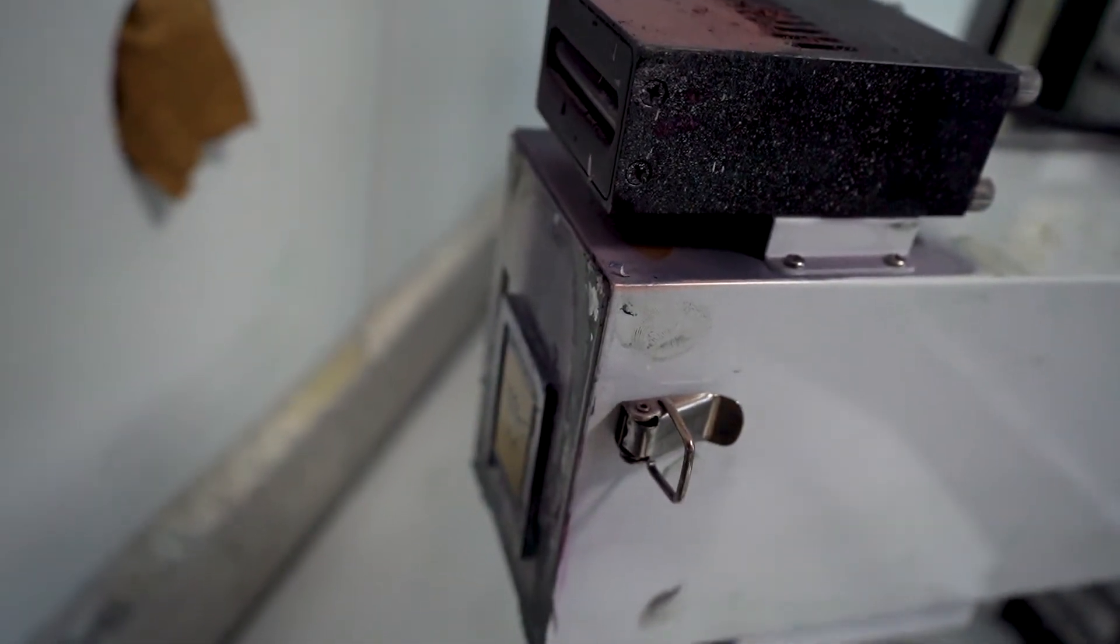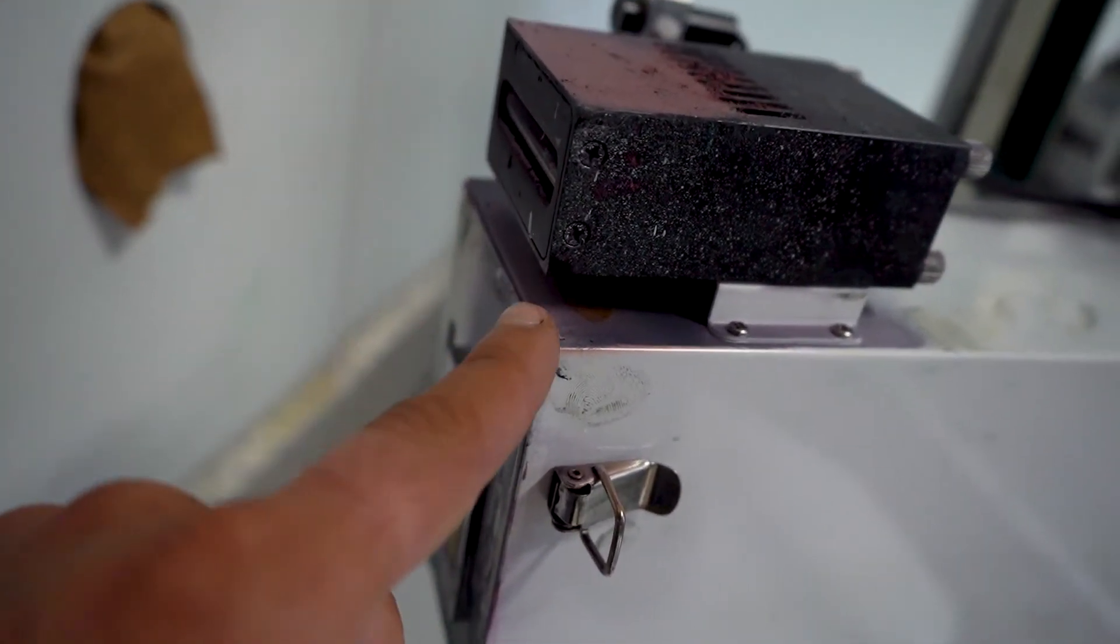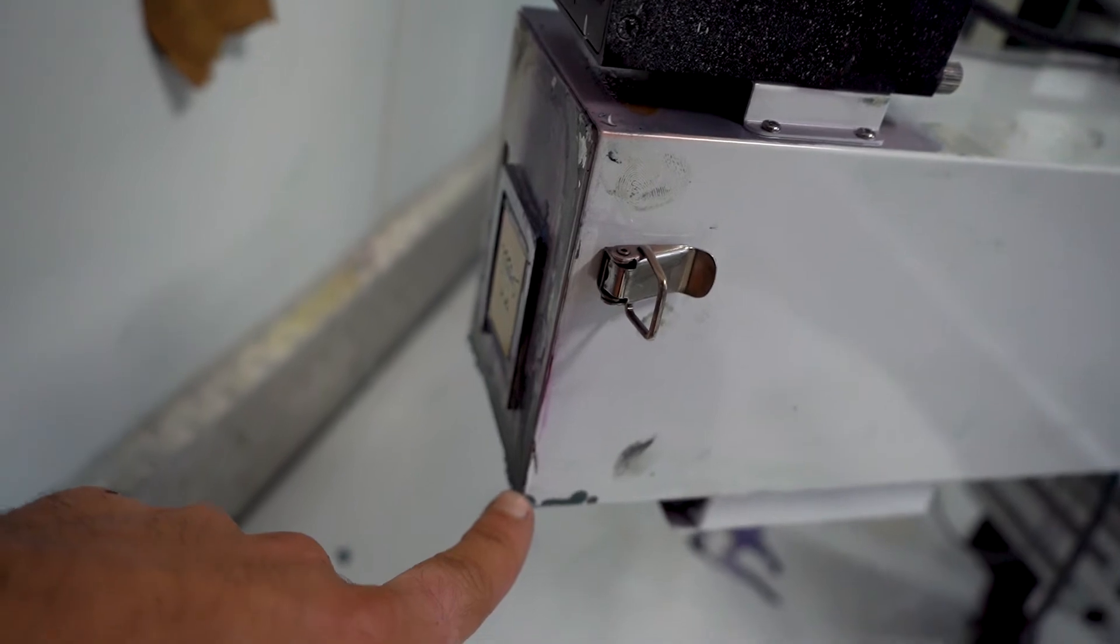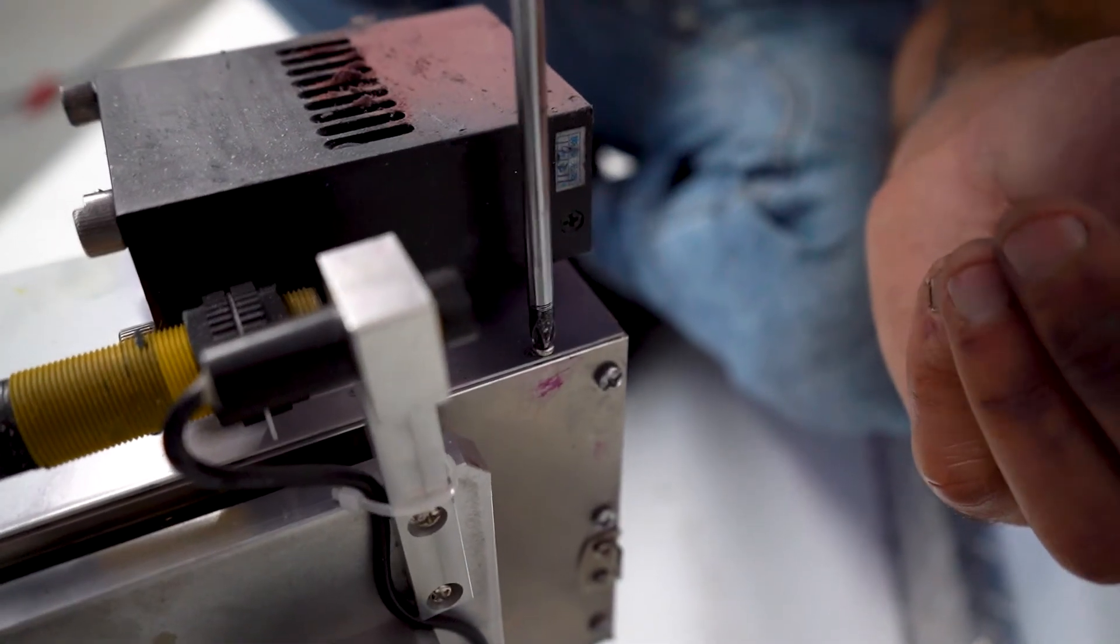If you have installed the printhead's housing correctly, this will be flush. Replace these four housing screws.